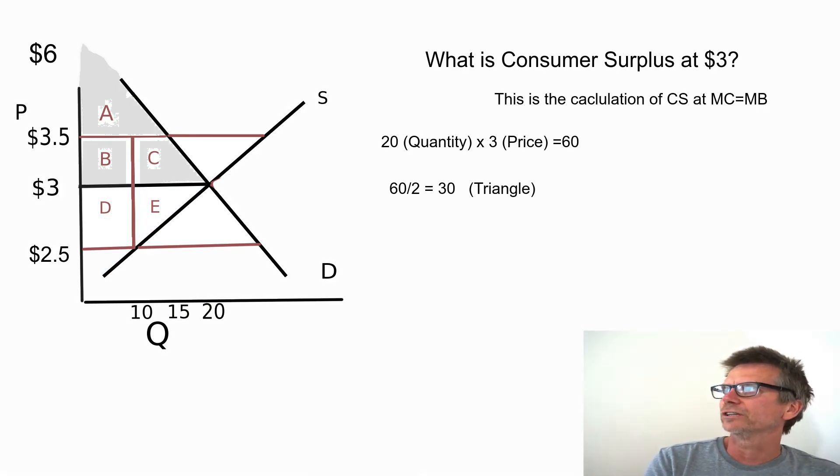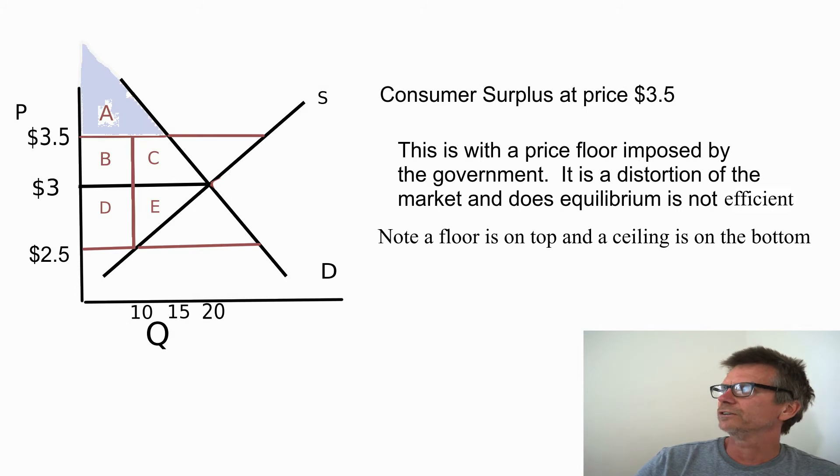So how do you calculate this? Let's say consumer surplus at $3. That would be the area of the triangle, which is 3 times 20 equals 60. And since it's a triangle, you divide it by 2. My triangles could be better, perfectly aligned. But in this case, let's just assume that it's divide by 2 and it equals 30. So that's the consumer surplus. It's very easy.